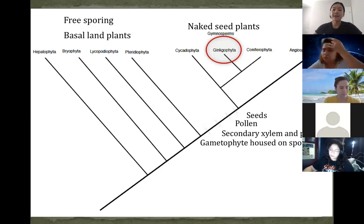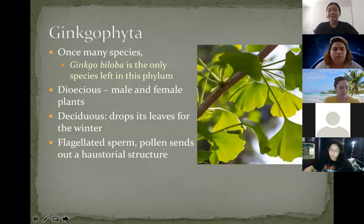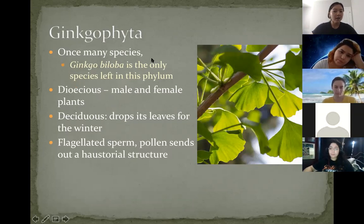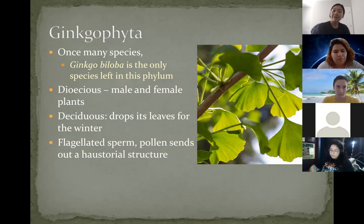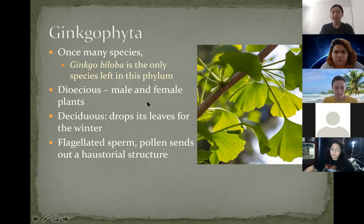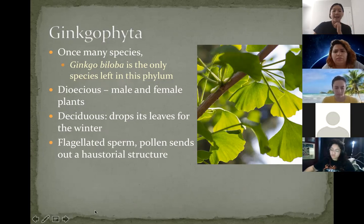Now we'll go over Ginkophyta. There is only one species left in this entire phylum: Ginkgo biloba. Just like Cycadophyta, Ginkgos are dioecious — separate male and female plants — and they still have flagellated sperm, so their pollen sends out a tube that bursts to allow the sperm to swim down to the egg. However, cycads are evergreen whereas ginkgos are deciduous — during wintertime they drop their leaves to prevent freeze-induced cavitation.